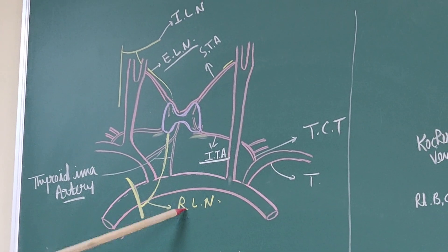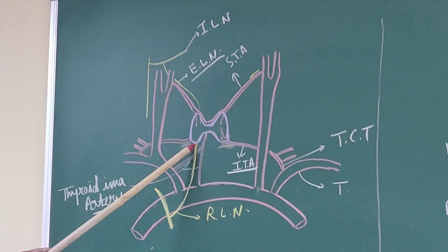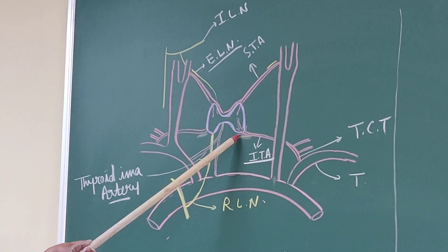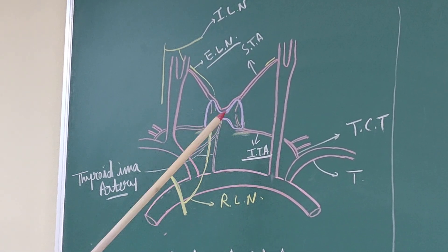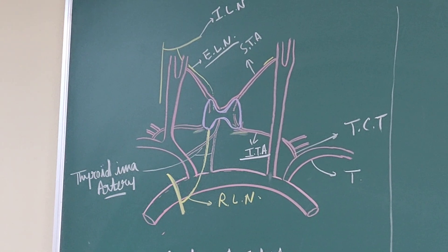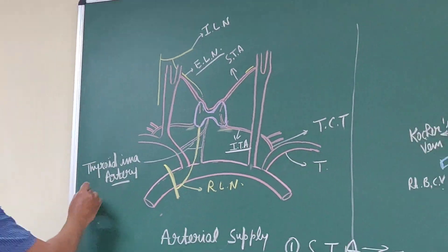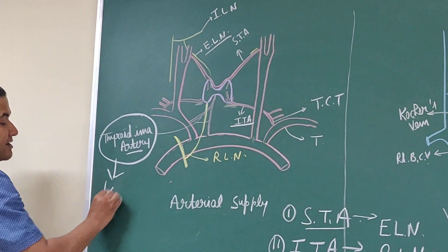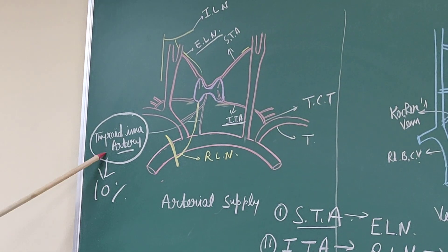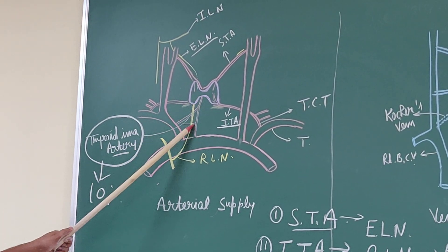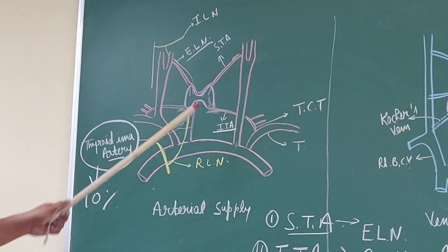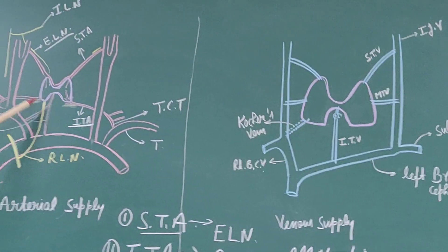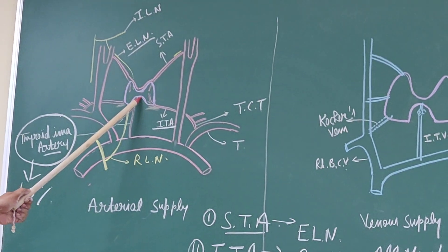The recurrent laryngeal nerve may pass superficial to the inferior thyroid artery, or deep to it, or through its branches, as the inferior thyroid artery divides into 4 to 5 branches at the base of the thyroid gland. The next artery is the thyroidea ima artery, present in 10% of individuals. When present, it enters through the lower border of the isthmus.